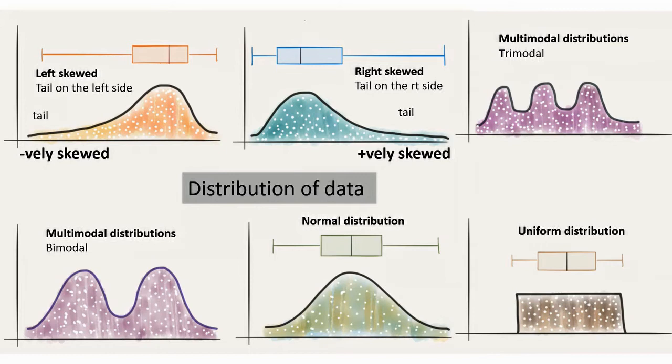Sometimes data are left skewed, that's to say tail is on the left side. Right skewed, tail is on the right side. Multimodal can be trimodal, can be bimodal, normal distribution, or can be uniform distribution.